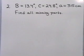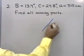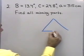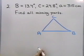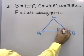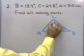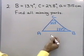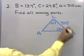Let's look at another problem. Suppose angle B is 13.4 degrees, angle C is 24.8 degrees, and side a is 315 centimeters. I'll draw a triangle for reference — again, it doesn't have to be accurate — and label angles A, B, C. Angle B is 13.4 degrees, angle C is 24.8 degrees, and side a is 315 centimeters.